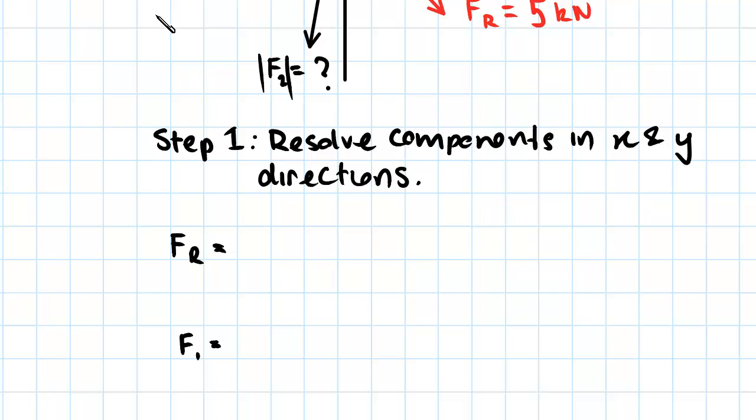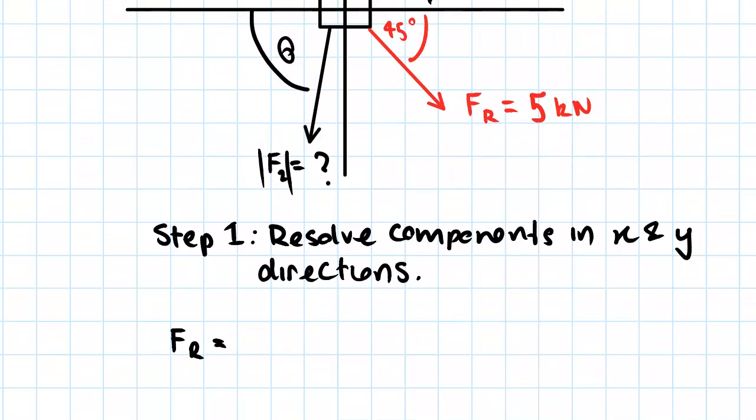we're going to start by doing the resultant force. So FR is, as we can see above, FR is 5 kilonewtons acting in this 45 degree angle. So we're going to write this in vector notation. So we start with the x component. Since it is pulling this way, it's in the positive x direction. So we're going to have 5 cos 45 in the i direction.